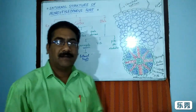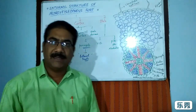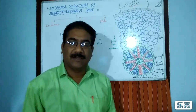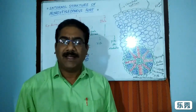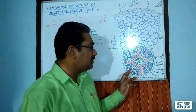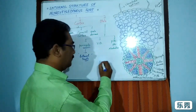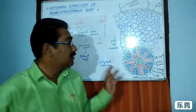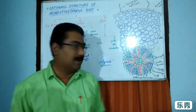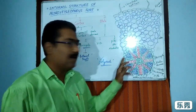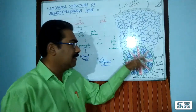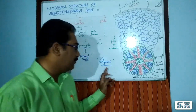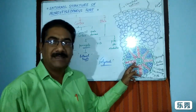Vascular bundles are of the radial type in the monocot root. In the dicot root, a tetrarch type of xylem is usually present — monarch to tetrarch. But in the monocot root, polyarch type of xylem is present, meaning many xylem vessels are arranged. This is the important distinguishing character between dicot root and monocot root.